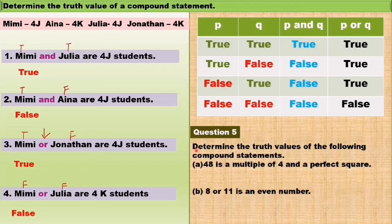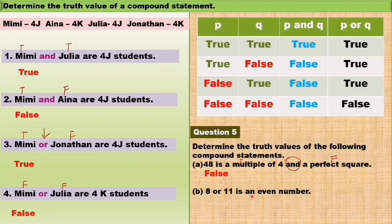Question number 5: determine the truth values of the following compound statements. A: '48 is a multiple of 4 and a perfect square.' 48 is a multiple of 4 — true. 48 is a perfect square — false. The keyword is AND, which is very particular; both statements must be true. So this is a false statement. B: '8 or 11 is an even number.' 8 is an even number — true. 11 is not an even number — false. But because the keyword is OR, either one true can form a true statement. So this is a true statement.